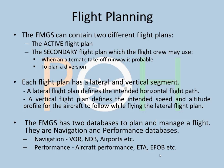Each flight plan has a lateral and a vertical segment. The lateral flight plan defines the intended horizontal flight path, including track and heading. The vertical flight plan defines the intended speed and altitude profile — rate of climb, descent, and altitude — for the aircraft to follow while flying the lateral flight plan. The FMGS has two databases: navigation, which stores VORs, NDBs, airports, ILS and VOR frequencies; and performance, which covers aircraft performance data such as ETA and estimated fuel on board.